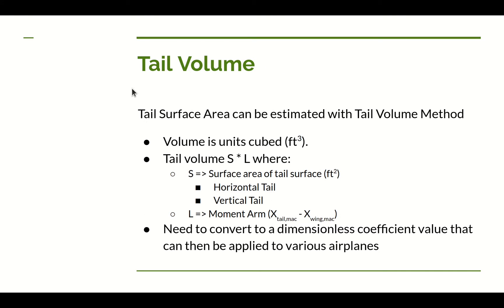The tail surface area and tail boom length are calculated using the tail volume method. The tail volume is in units of length cubed — feet cubed when using feet. It equals the surface area of the tail multiplied by a length. The length is the distance from the mean aerodynamic chord (MAC) of the tail surface to the 25% MAC of the main wing, which is also assumed to be the nominal CG location for this ultralight.